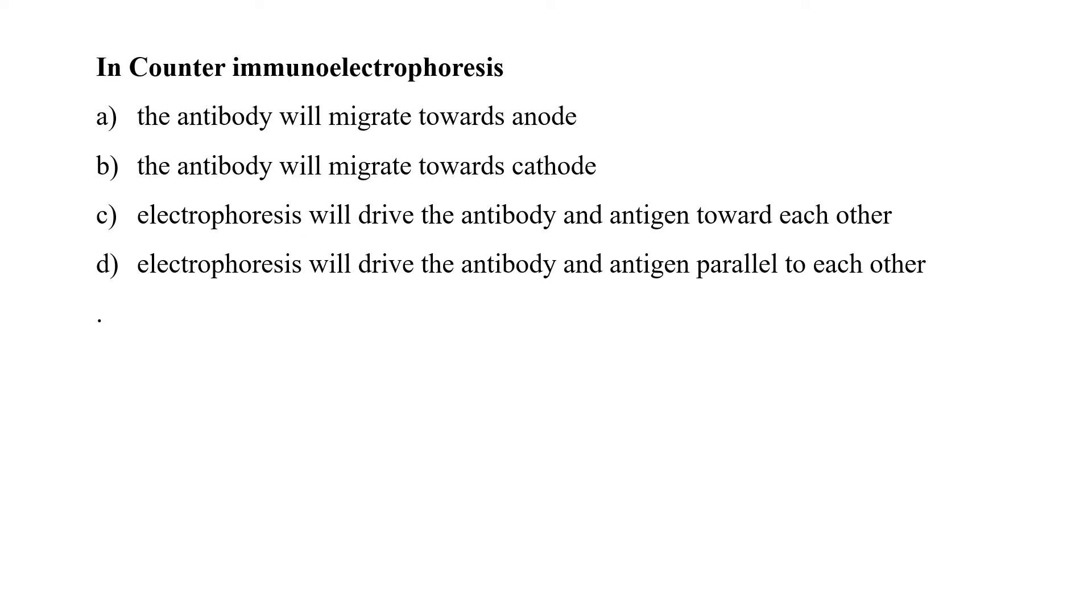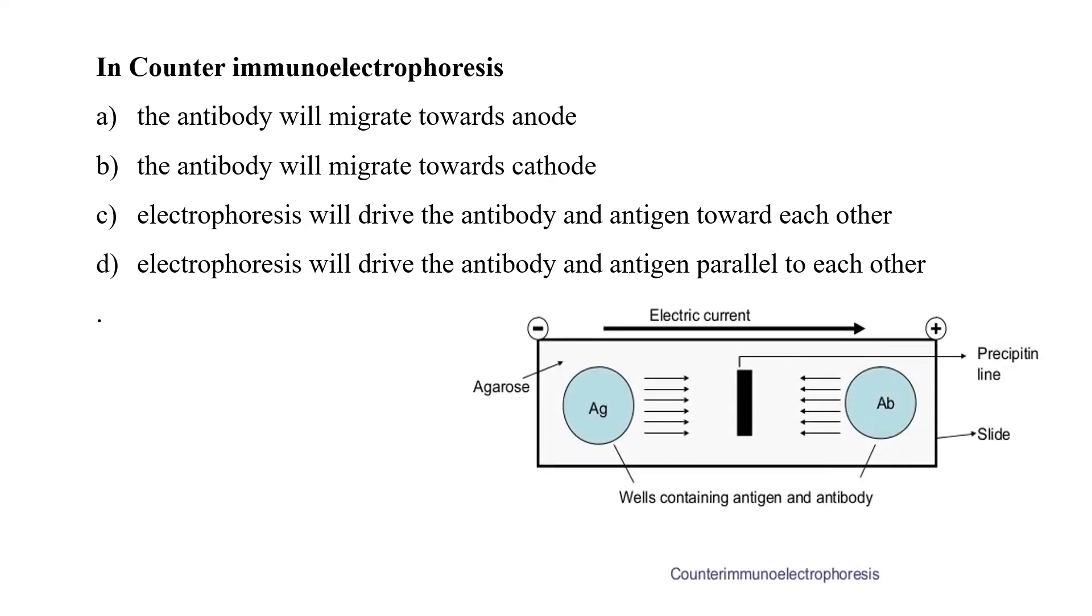In counter-immunoelectrophoresis, the antibody will migrate towards anode, the antibody will migrate towards cathode, electrophoresis will drive the antibody and antigen towards each other, or electrophoresis will drive the antibody and antigen parallel to each other. Counter-current immunoelectrophoresis is a modification of immunoelectrophoresis in which antigen and antibody move in the opposite direction and form precipitate in an area where they meet in concentration of optimal proportions. So option C would be the correct answer.